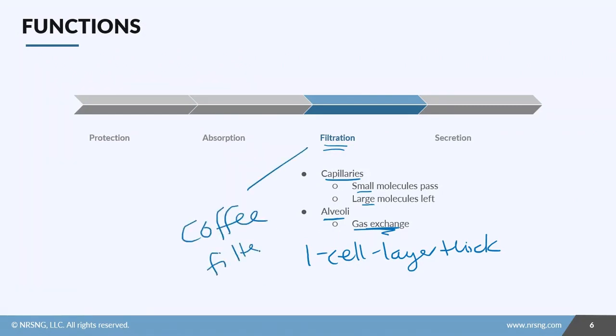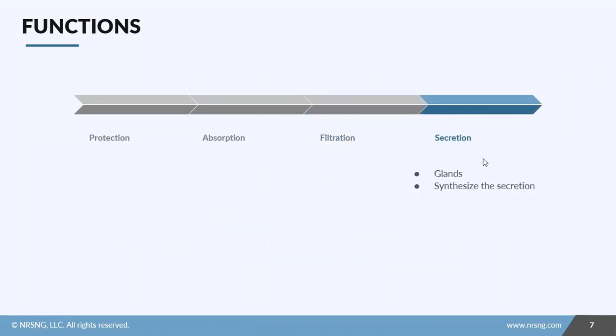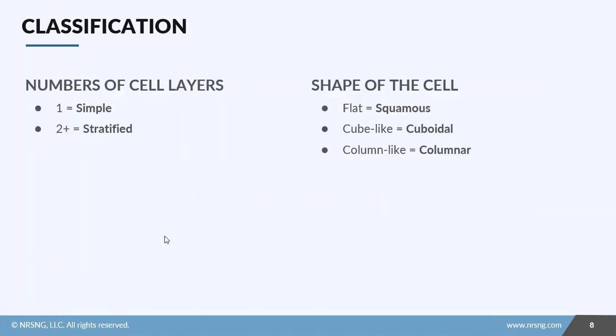Think of this like a coffee filter. When we have a coffee filter, the water can get through but not the coffee grounds. We allow certain things through and leave other things behind. Last is secretion. Like I said before, epithelial tissue actually makes up the secretory portion of most of our glands in our body. So this tissue is actually going to synthesize or create whatever the secretion is for that specific gland and then release it into the gland to be secreted. We'll look at glands in more detail in a separate lesson.